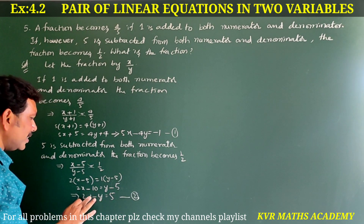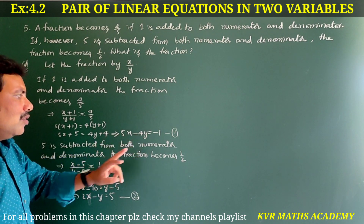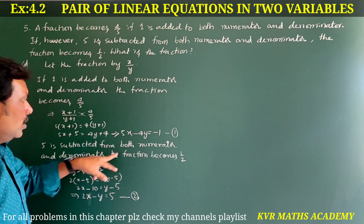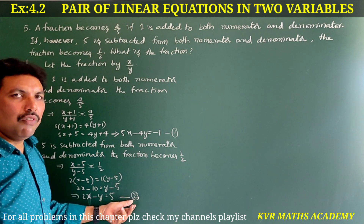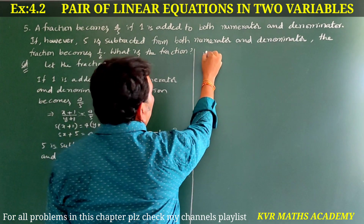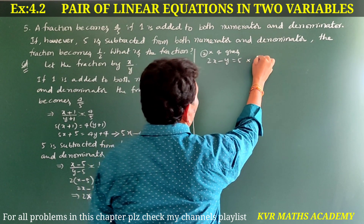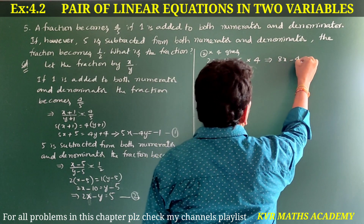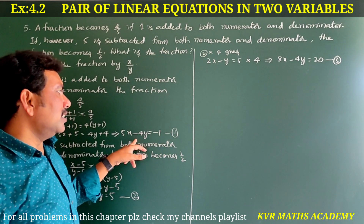This is equation number 2: 2x minus y is equal to 5. Equation number 1 is 5x minus 4y is equal to minus 1. To eliminate y, multiply equation number 2 by 4, giving 8x minus 4y is equal to 20. This is equation number 3.